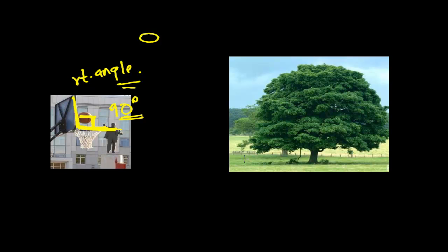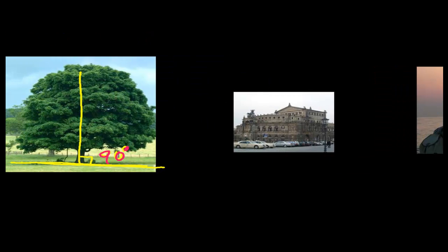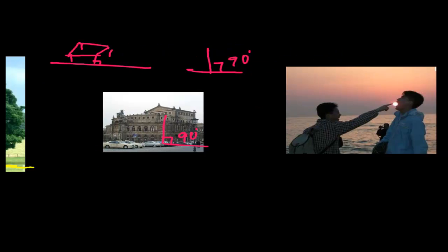The best example is a tree. The ground is a straight line, and the trunk of the tree goes vertically — together they make exactly 90 degrees, a perfect right angle. Also, any building always makes 90 degrees with the ground. A table placed on the ground also makes 90 degrees. Everything placed vertically always makes 90 degrees with the horizontal surface.